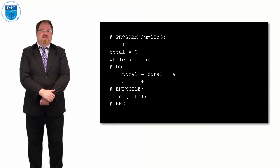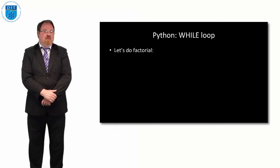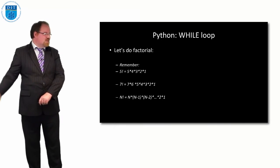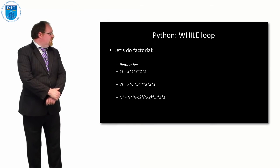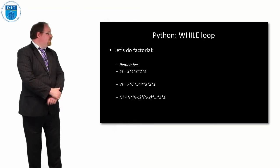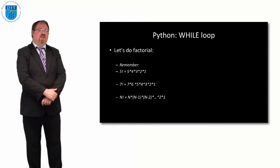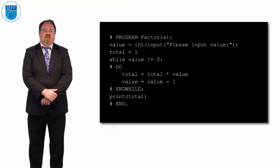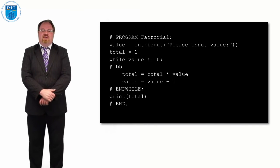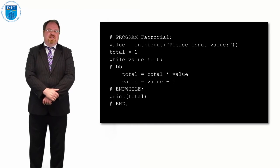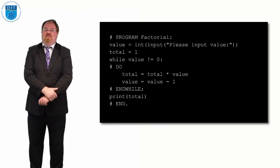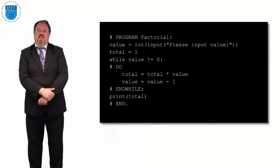We looked at the factorial in pseudocode - let's see how it gets implemented in Python. Factorial means the number multiplied by the number minus 1, multiplied by the number minus 2, all the way to 1. So 7 factorial is 7 by 6 by 5 by 4 by 3 by 2 by 1. In Python, the program 'factorial' reads a value from the user using input, converts it to integer, starts with a total of 1, and loops while value is not equal to 0, multiplying total by value and decrementing value by 1. That's the while loop - simple as that, exactly the same as pseudocode.